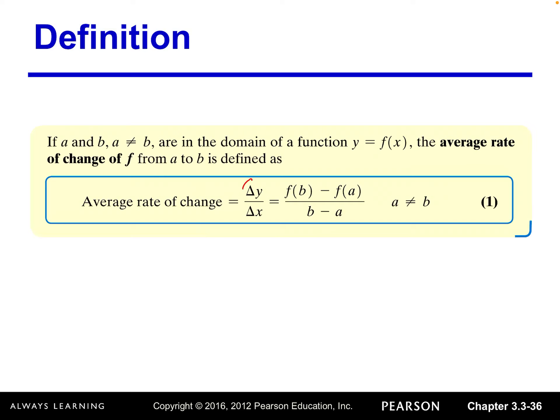Delta y over delta x — the ratio of two changes. Delta y is the difference between the two y-coordinates from a to b, and delta x is the difference between the two x-coordinates. This should feel familiar — that's the slope of a line. Slope is the average rate of change: the difference between two y-coordinates over the difference between two x-coordinates.